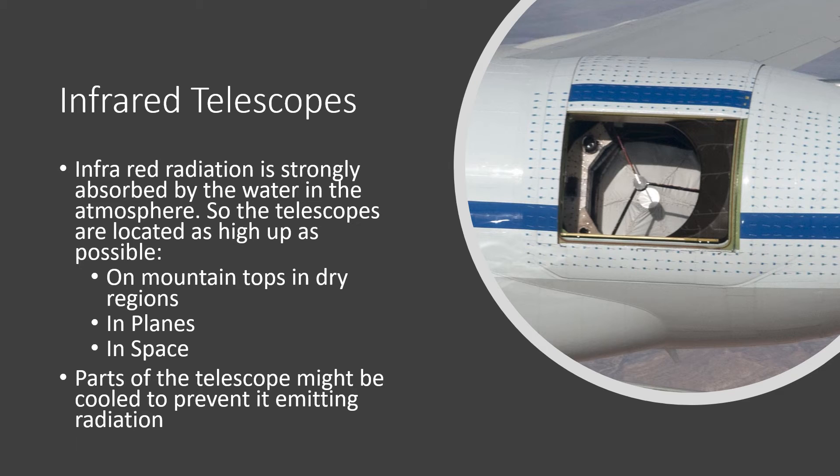Infrared telescopes' problems are that the atmosphere has a lot of water in it and infrared radiation is strongly absorbed by water, so we have to locate our telescopes in areas where they'll look through as little water as possible. Options are on tops of mountains in dry regions, in planes as in airplanes as in the picture here, and obviously in space like the Hubble Space Telescope. Because the telescope itself will be emitting infrared radiation, the telescope might need to be cooled to prevent the infrared radiation created by the actual instrument itself swamping the radiation that we're trying to detect.